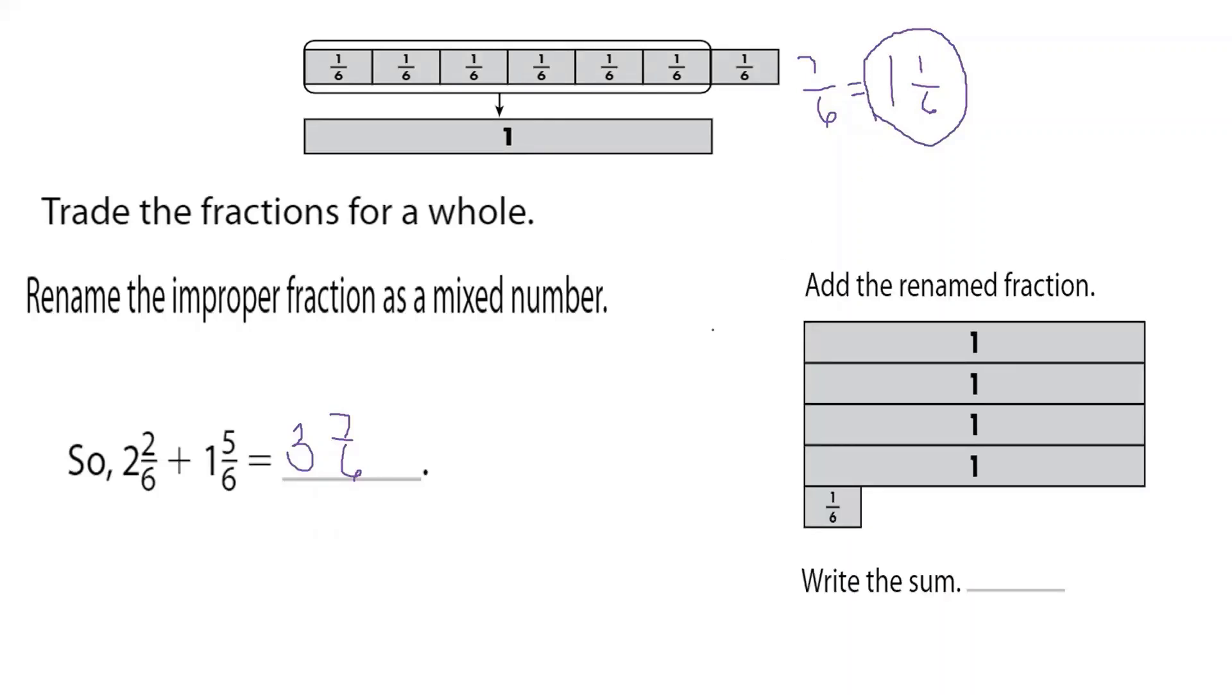I actually need to add the renamed fraction with that whole number. So don't forget about that 3 over there. So I'm going to add 1, 2, 3. And I'm going to add it now with this new whole number, that 1. And I have 1/6 left over. So when you add it up, you should get 4 and 1/6.